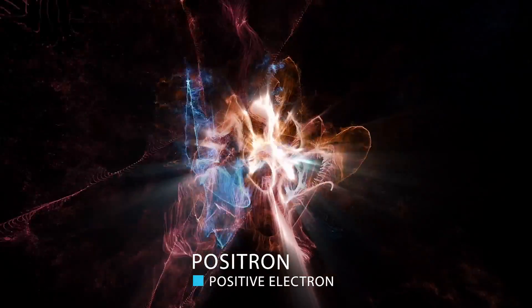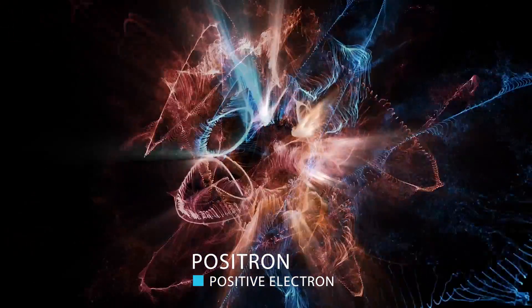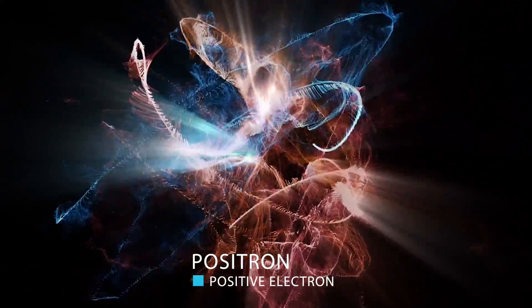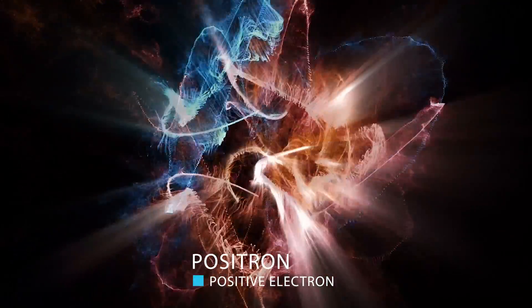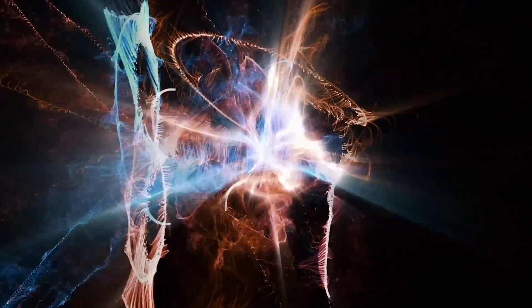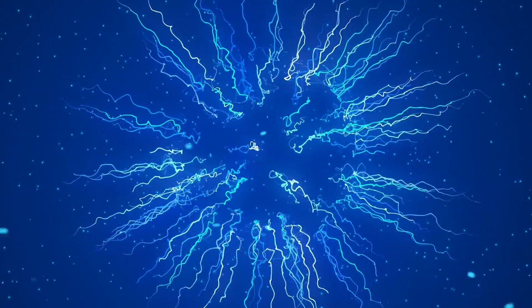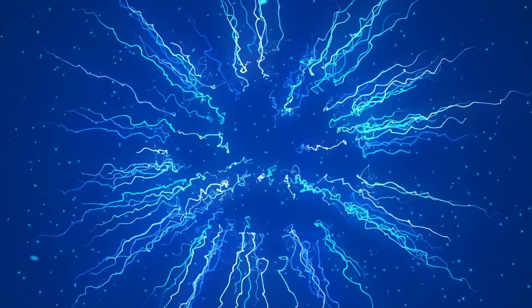Going into a little bit more detail, the antielectron is called a positron for positive electron, and it is positively charged with a lepton number of minus one. The positron has exactly the same mass as the proton.